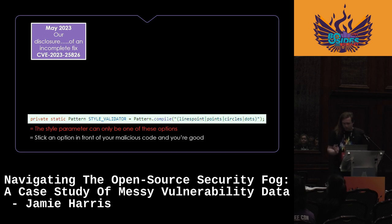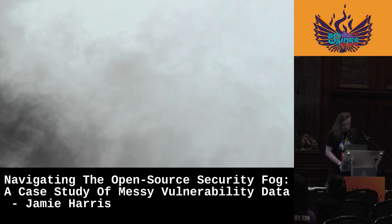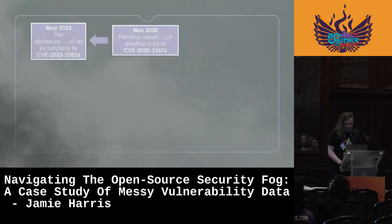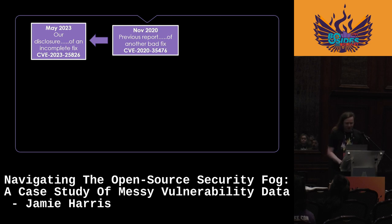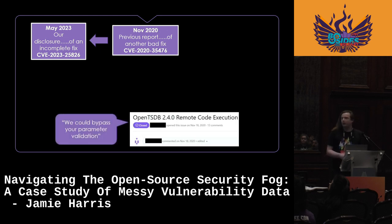Because I discovered an incomplete fix, there must have been a previous disclosure of this vulnerability prior to mine. Of course there was. Going backwards in time through the fog, we find back in November 2020 a previous report which led to that fix I identified as bypassable. But this report was also for an incomplete fix — basically, that disclosure found a different way to bypass the parameter validation, which required further fixing, and unfortunately that didn't quite work either.